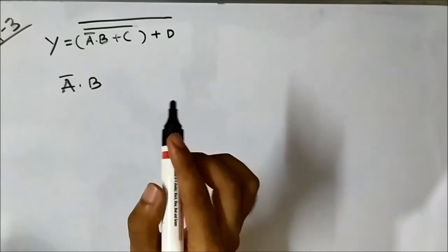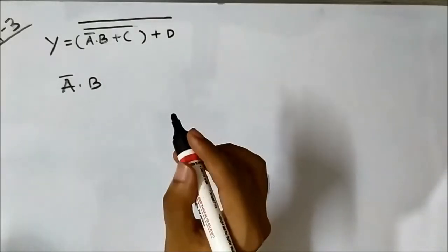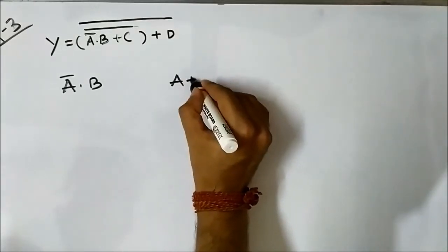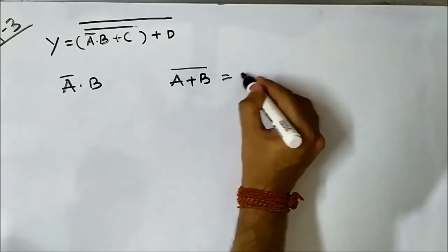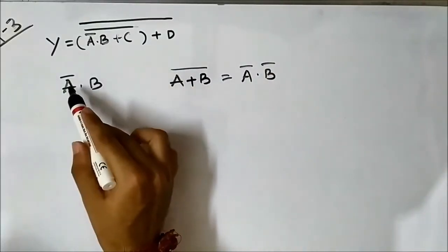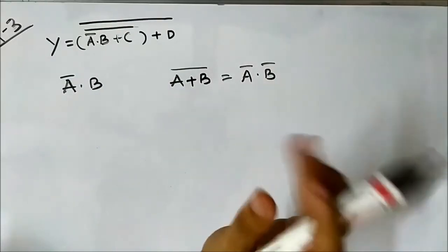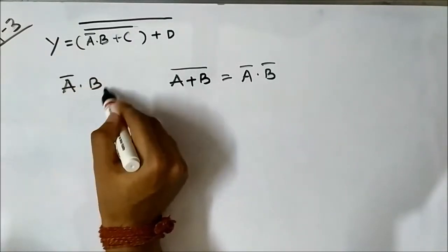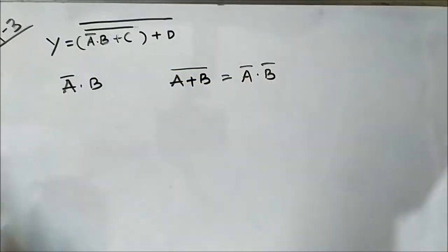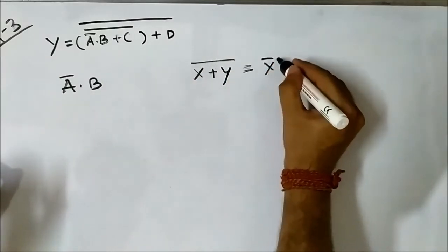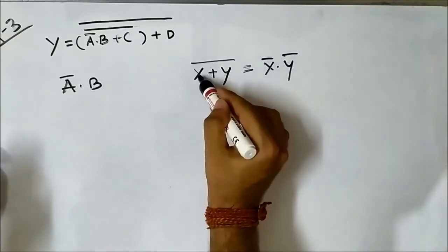To implement (a complement AND b), we apply De Morgan's theorem, which says: (a OR b) whole complement equals a complement AND b complement. So we need to pass two signals through a NOR gate. To avoid confusion, let's say we pass x and y through a NOR gate, giving us x complement AND y complement.